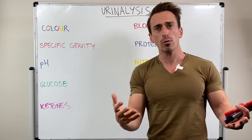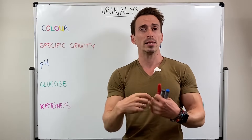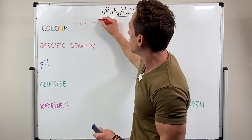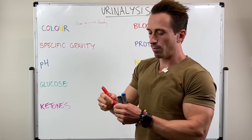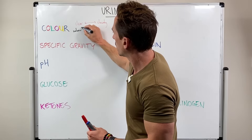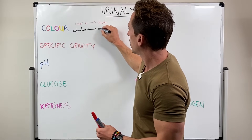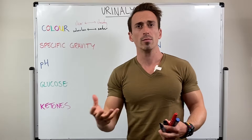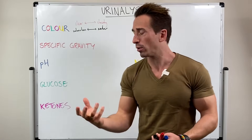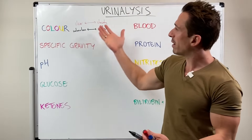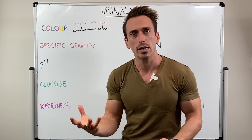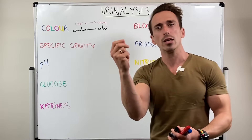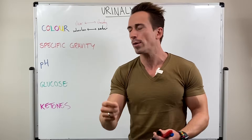First, let's have a look at colour. Colour is something you can obviously just take and look at. It can be clear or cloudy, colourless or amber, and anything in between. What can change the colour of urine can be anything from food to drugs, the presence of blood, or from clear to cloudy could be the presence of proteins or dissolved substances, or maybe an indication of an infection.